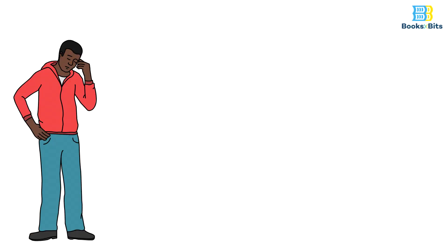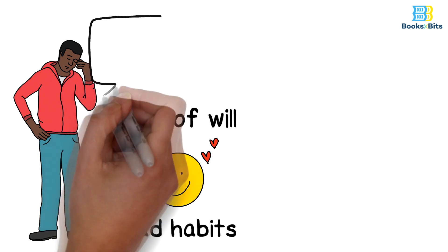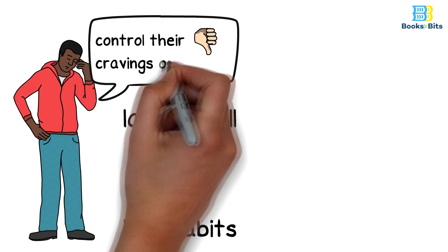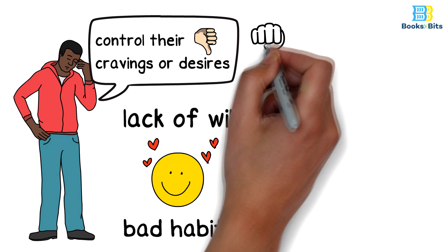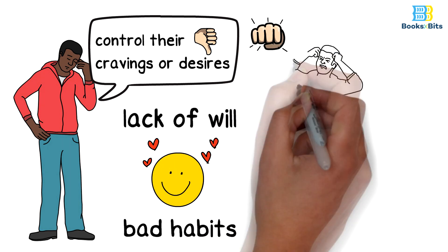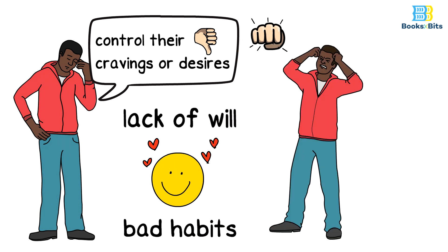Many people complain about their lack of will, to the extent that they aren't able to break their bad habits, and they say that they can't control their cravings or desires. They describe themselves as impulsive, reckless, and are easily angered, and they do not have control over these actions.